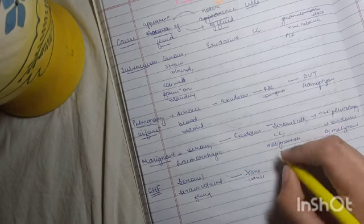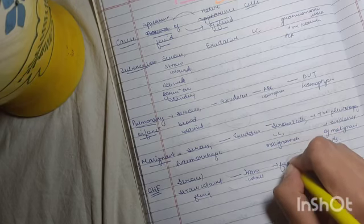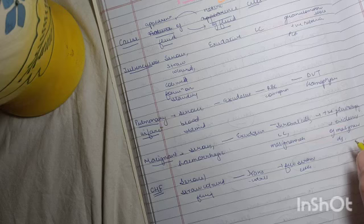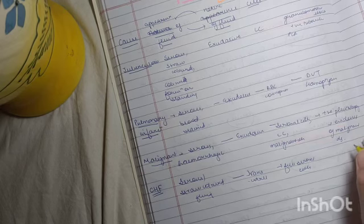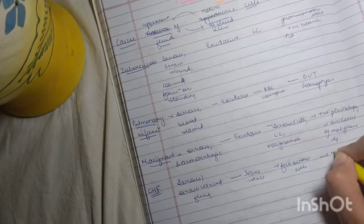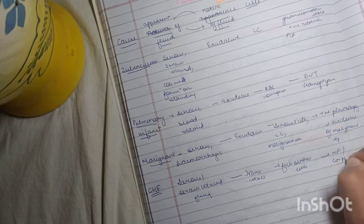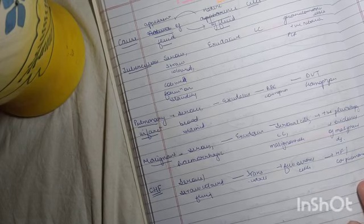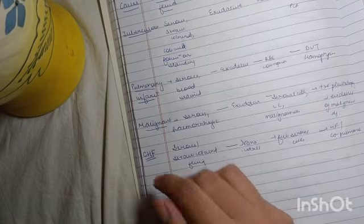It will also have serosal cells but few in number. Congestive heart failure features you can mention: there will be heart failure, cor pulmonale. They will respond to diuretics.